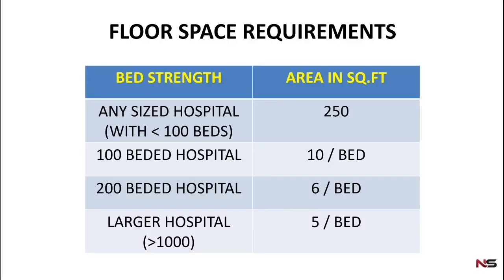The floor space of a hospital depends upon its bed strength. If the bed strength is less than 100, then that hospital should have a minimum of 250 square feet of floor space. This 250 square feet applies to any hospital with less than 100 beds — whether it is 50 beds or even 20 beds, it should have 250 square feet of floor space.